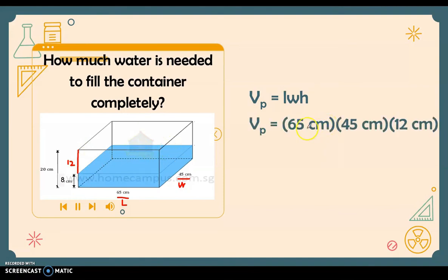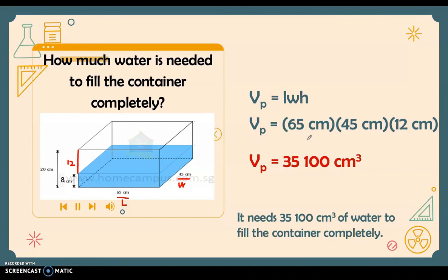Substituting the values: 65 centimeters times 45 centimeters times 12 centimeters. Multiplying the three measurements gives us 35,100 cubic centimeters. The 12 centimeters comes from the fact that the container's total height is 20 centimeters and there is already water with a height of 8 centimeters, so we only need to fill 12 more centimeters. That concludes the volume of a cube and prism — I hope you learned something from this video.